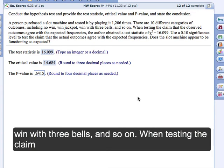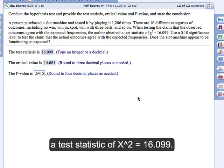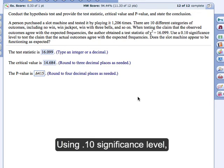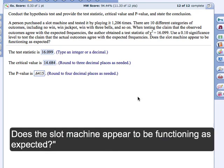When testing the claim that the observed outcomes agree with the expected frequencies, the author obtained a test statistic of chi-squared equals 16.099. Use a 0.10 significance level to test the claim that the actual outcomes agree with the expected frequencies. Does the slot machine appear to be functioning as expected?